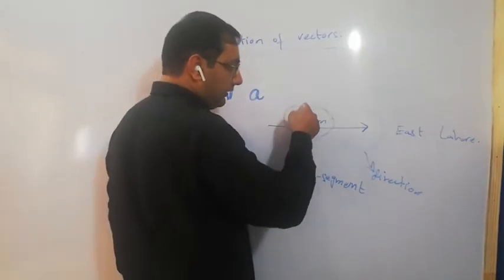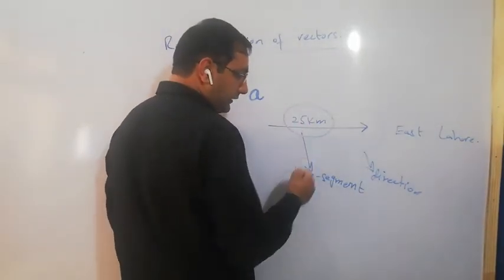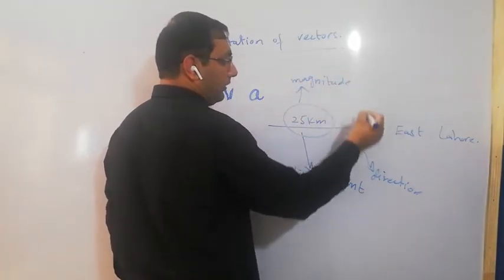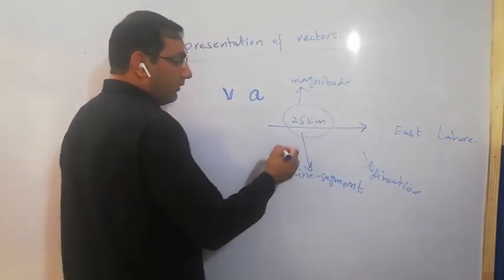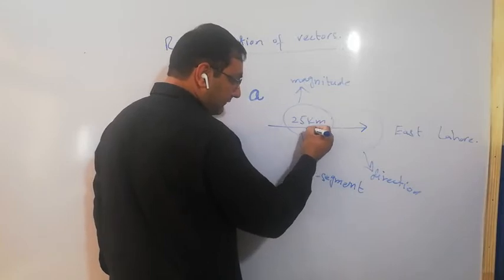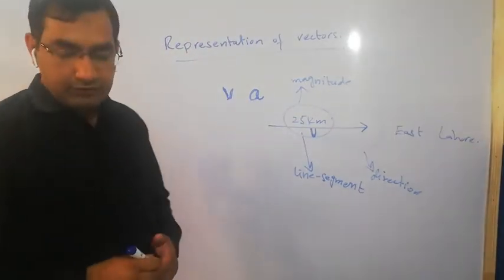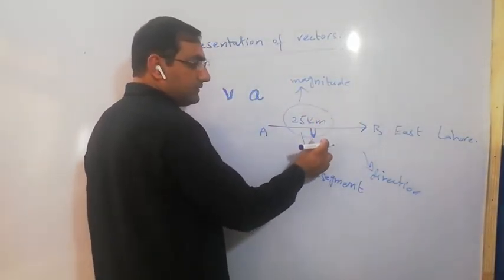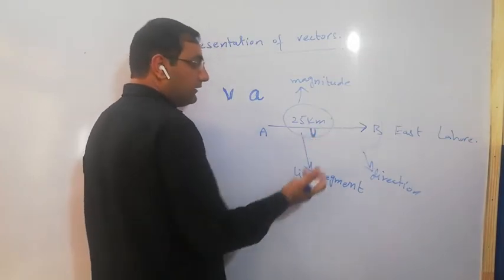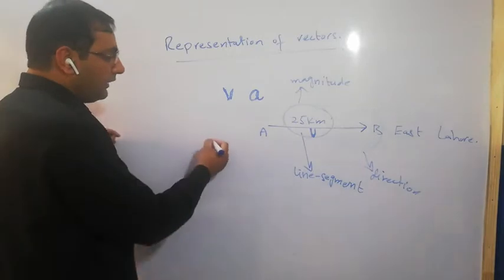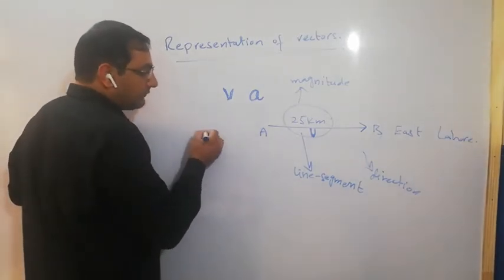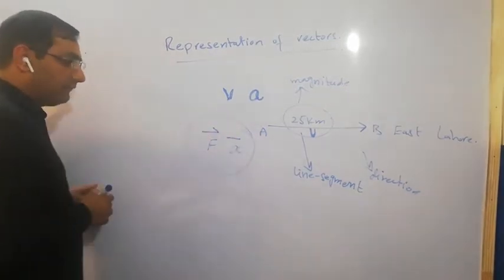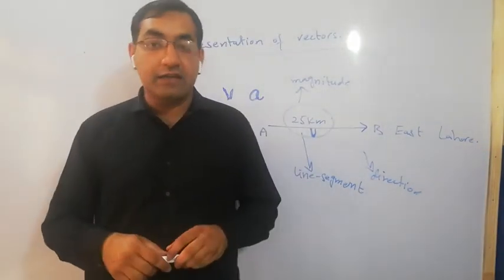If we also represent a direction, it becomes a vector quantity. The line segment represents both magnitude and direction. We represent this vector in bold letter V, or with an arrow or bar above it. This will be a vector quantity, and this is a graphical method.